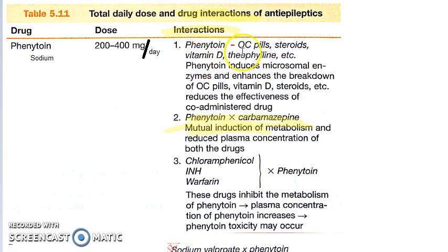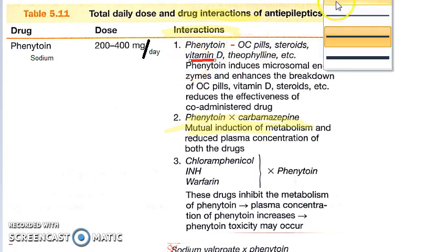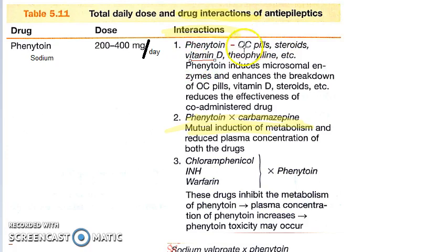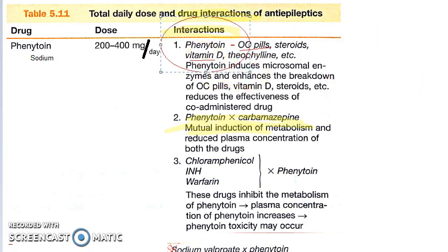Other drugs affected include steroids, vitamin D, and theophylline. Definitely remember vitamin D and OCP — phenytoin will reduce their activity. That's why in adverse effects, phenytoin causes osteomalacia, because vitamin D is reduced.